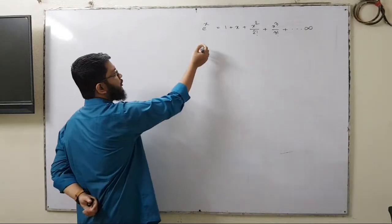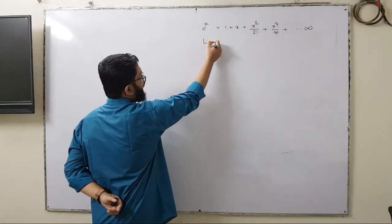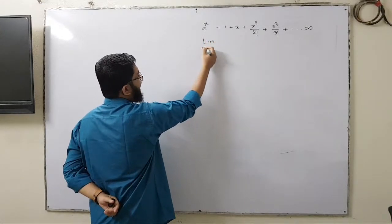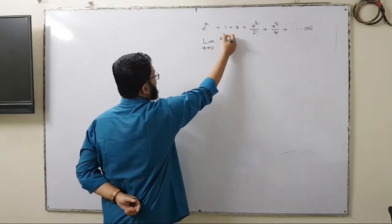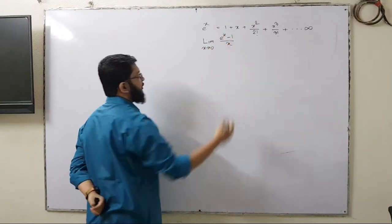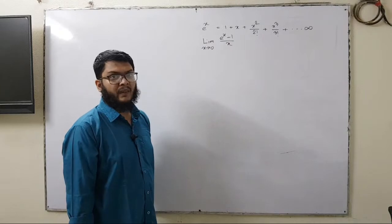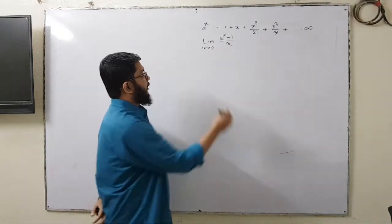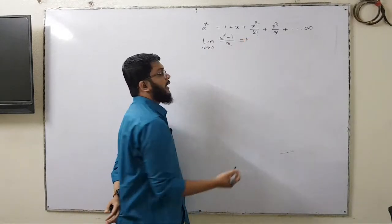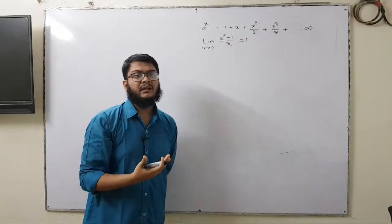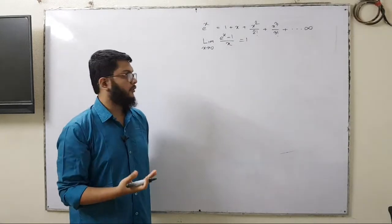For example, we want to find the value of the limit as x tends to 0 of e to the power x minus 1 divided by x, and this value will be equal to 1. Now we will derive how it becomes 1.